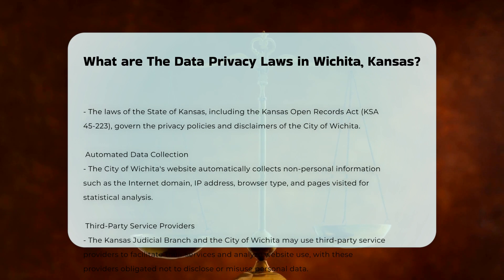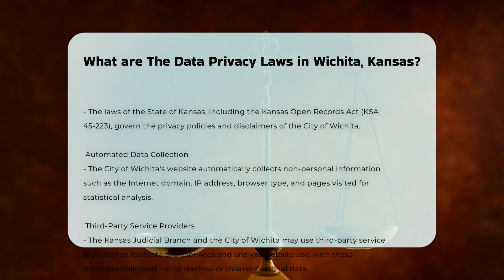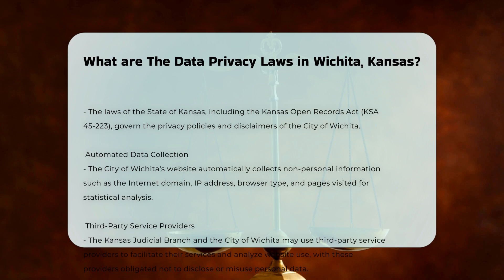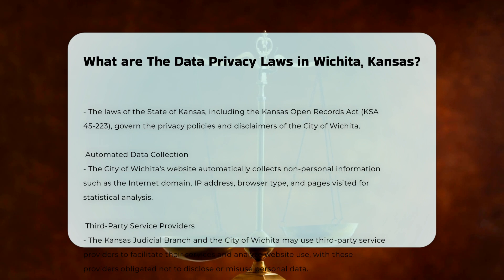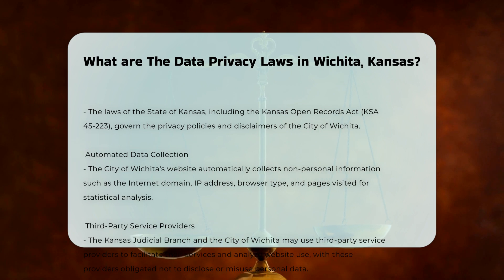Users also have the right to rectify inaccurate information, object to data processing, and request the restriction of data processing. Both the City of Wichita and the Kansas Judicial Branch implement security measures to protect personal data. While no method of transmission or electronic storage is 100% secure, they use commercially acceptable means to protect user data.